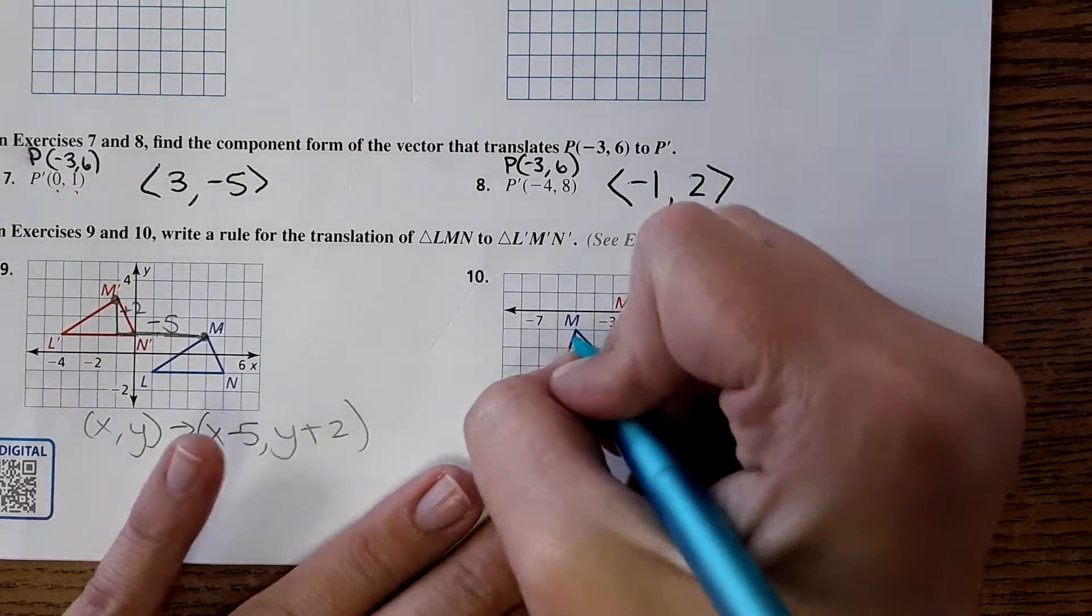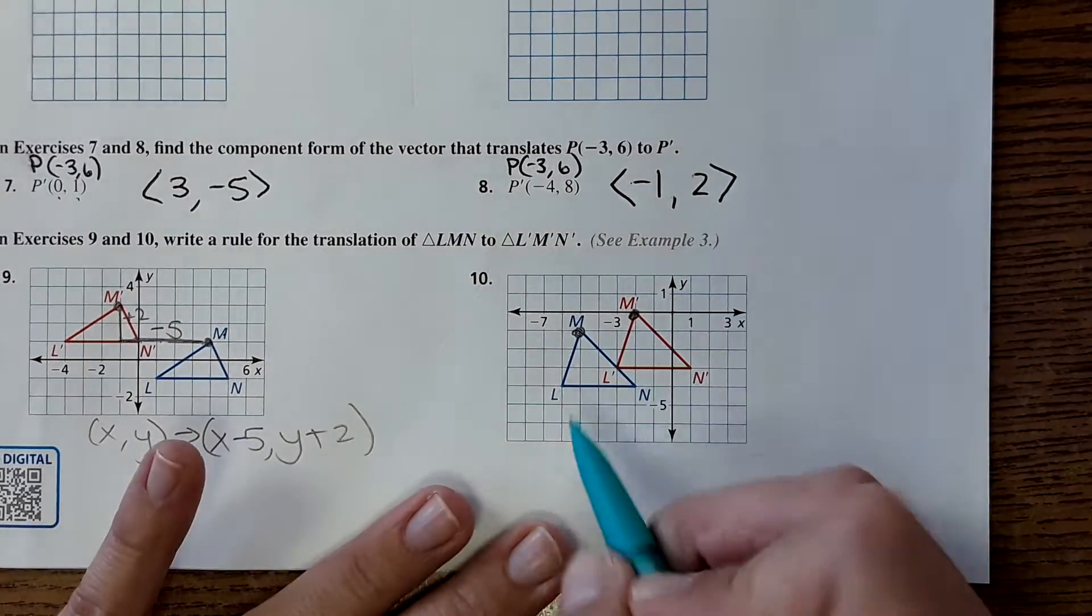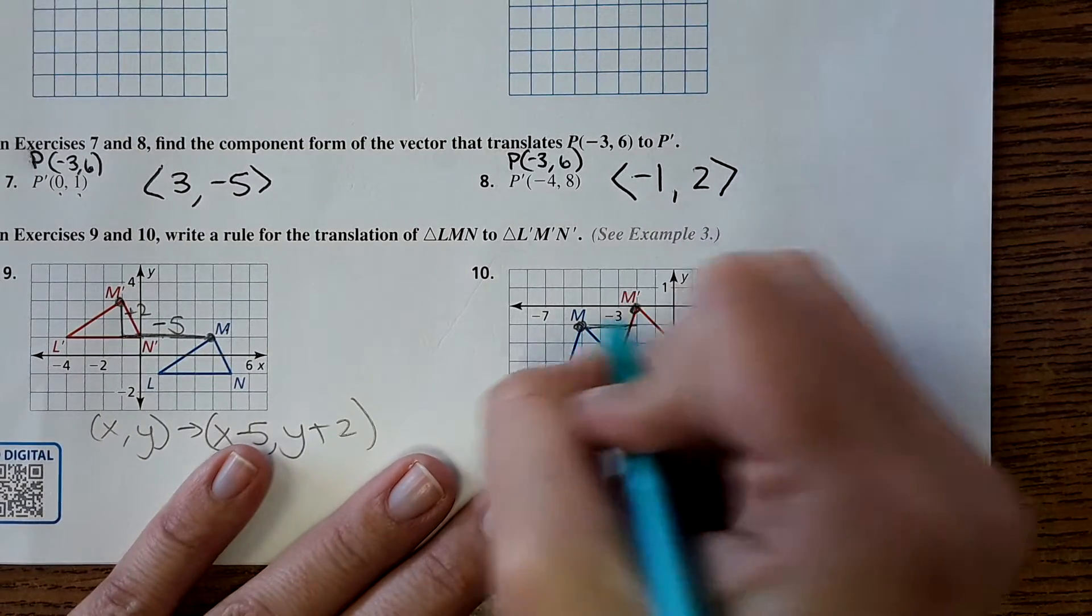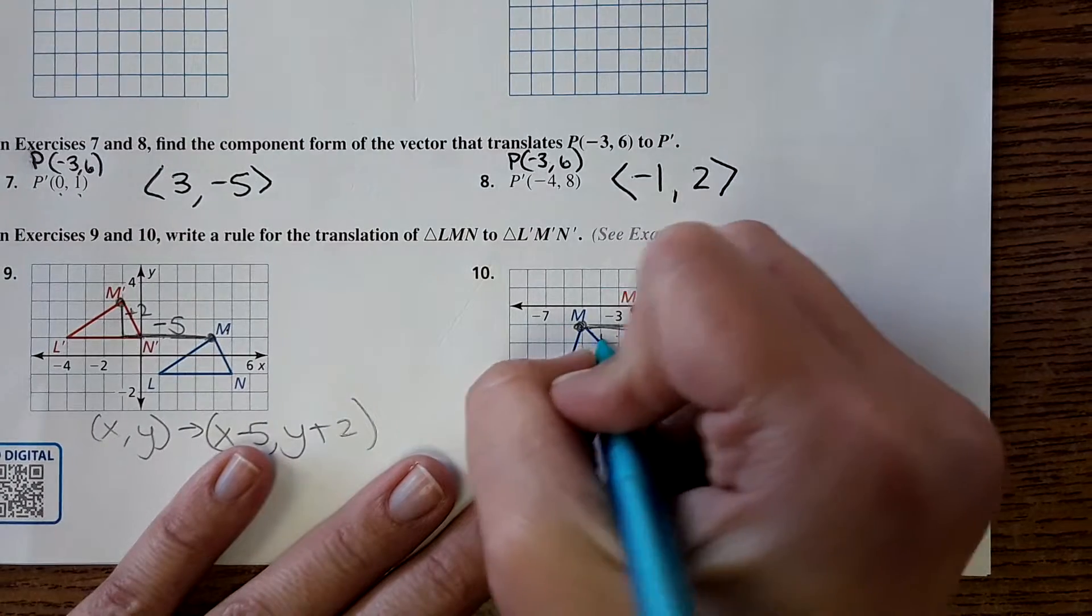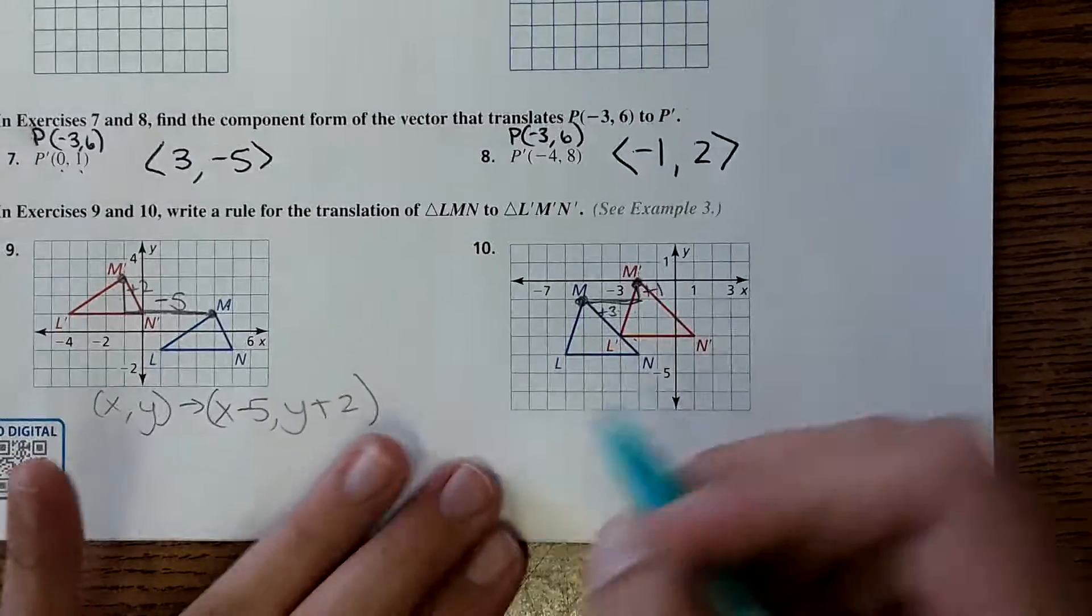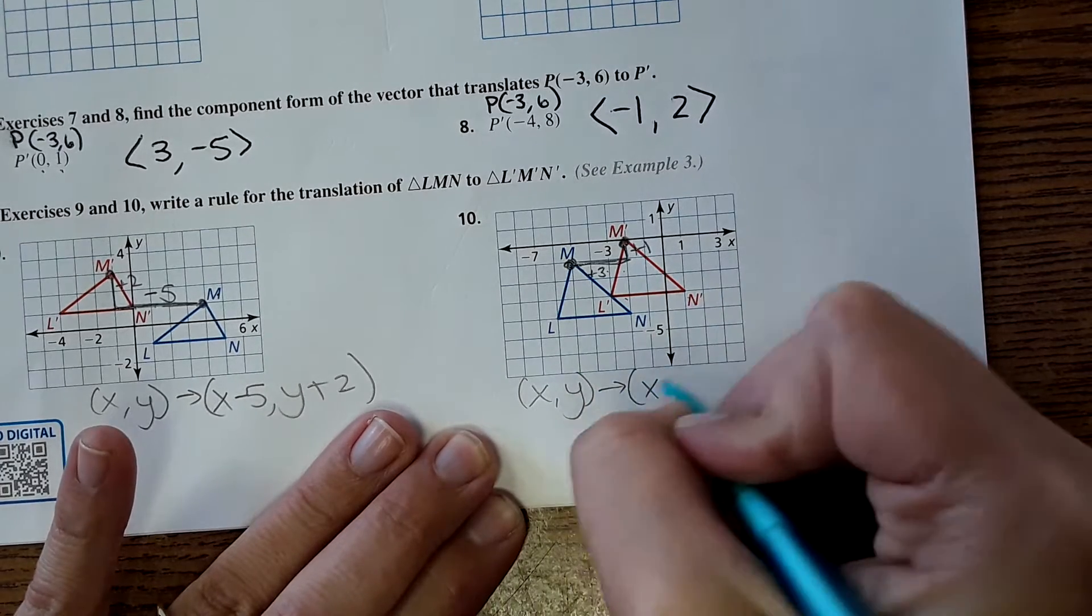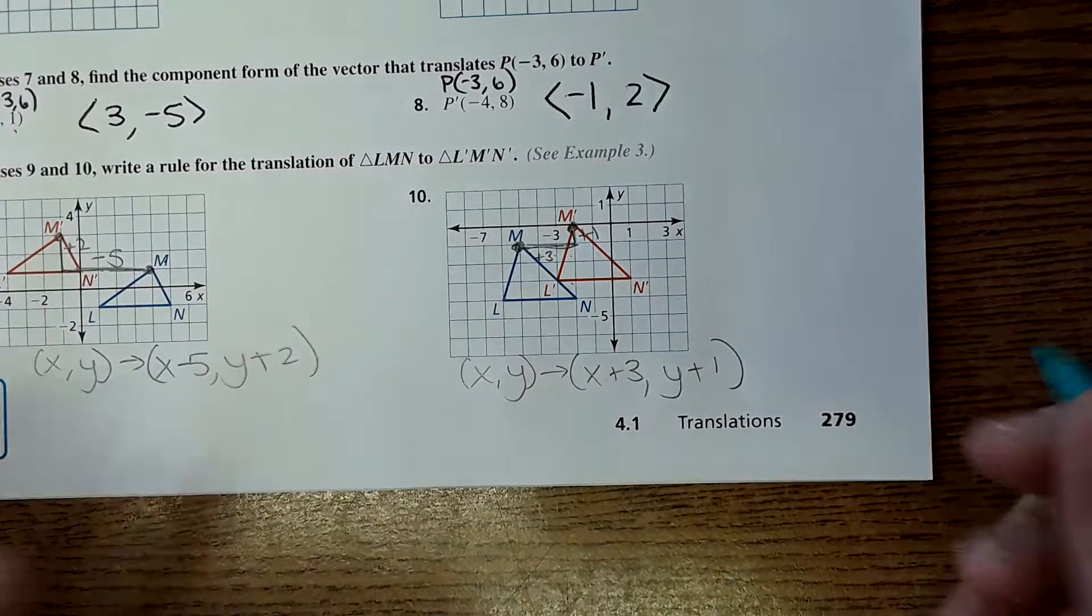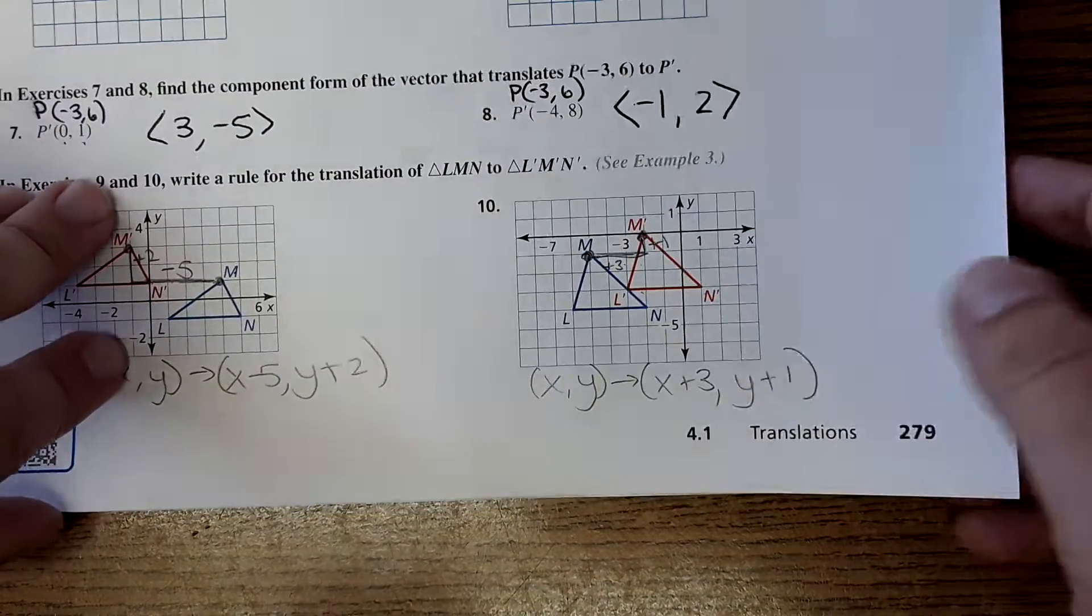Okay, number 10. Again, just choose one point. I might choose the M's, but you could choose the L's or the N's. And it's horizontal change and then vertical change. So horizontal change looks like it's plus 3. And then it's going up 1. So in terms of the rule, I would write X, Y is X plus 3, Y plus 1. And that's my answer for that. So then just turn the page. We're going to go to the back now.